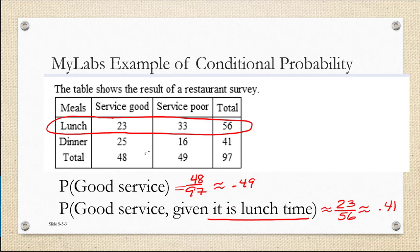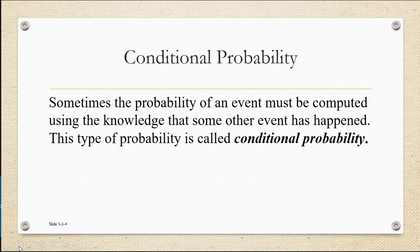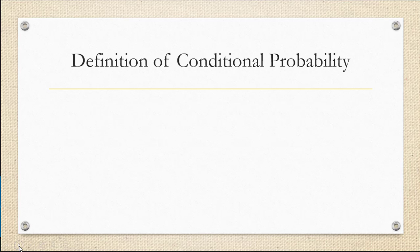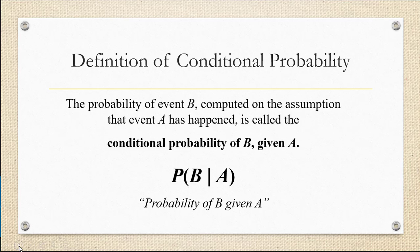This is called a conditional probability. Sometimes the probability of an event must be computed using the knowledge that some other event has happened, will happen, or is happening — it doesn't matter what tense of the verb you use — and this type of probability is called conditional probability. The formal definition says that the probability of an event B computed on the assumption that event A has happened is called the conditional probability of B given A, and the notation we use is P(B|A), read as 'probability of B given A.'